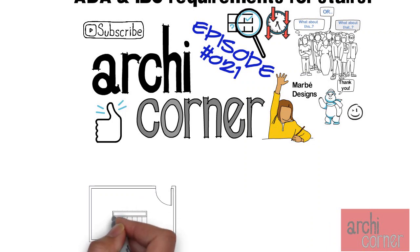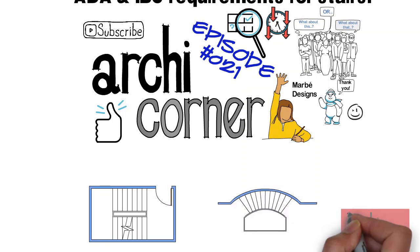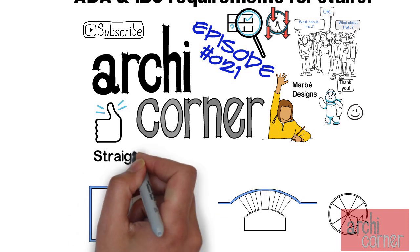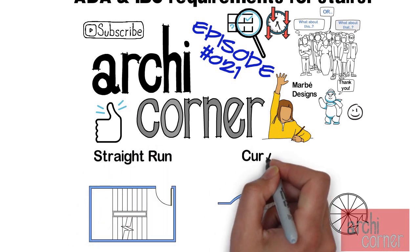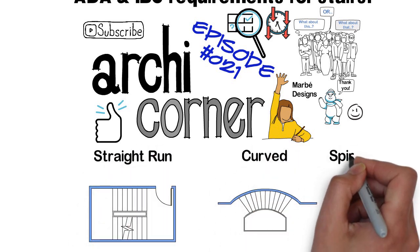From a code perspective there are three types of stair layouts. There are stairs with straight runs, curved stairs, and spiral stairs.